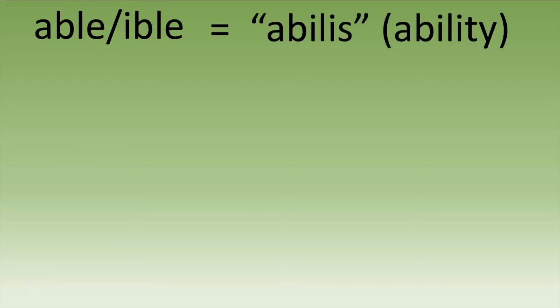Moving on, this is not a prefix — it is now a suffix: -able. It can also appear as -ible. It literally just means 'able,' coming from the Latin meaning ability — the ability to do something. One note about this suffix: whatever the root word is, the definition in English is going to be 'able to be' that root word.